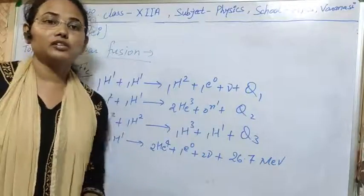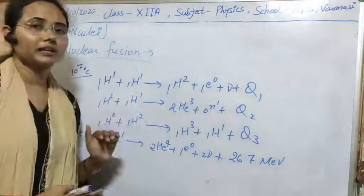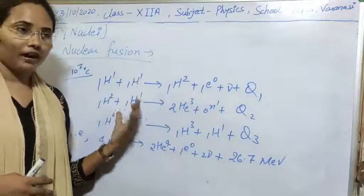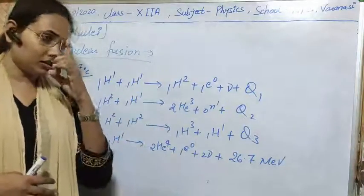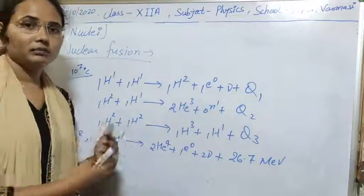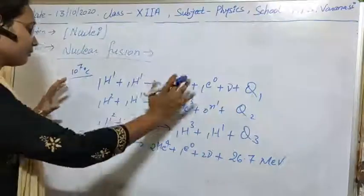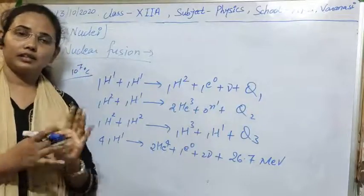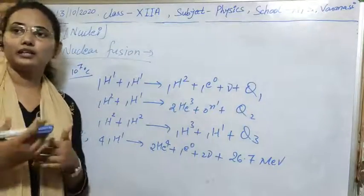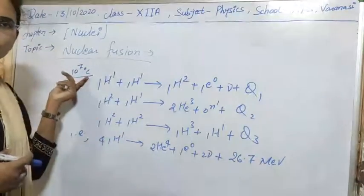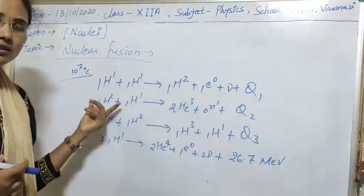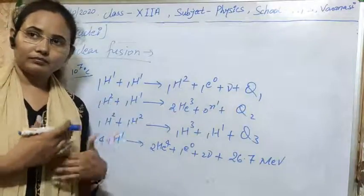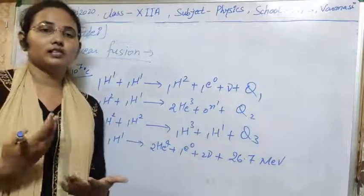We get energy continuously from stars until all hydrogen is converted into helium. After that, depending on its mass, the star converts into a white dwarf, neutron star, or black hole. Until it has hydrogen as fuel, nuclear fusion process will continuously take place, because there is sufficient temperature to start the fusion. That's why in stellar bodies nuclear fusion is continuously going on and we get continuous energy from the sun.